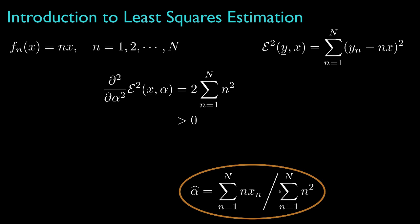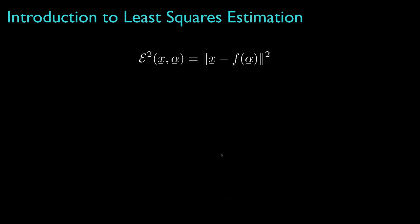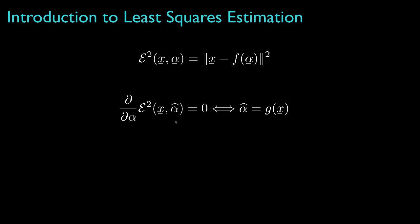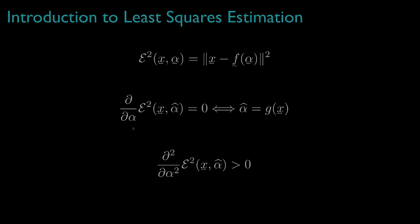To verify that this value is a minimum for the squared error rather than a maximum or a point of inflection, we should confirm that the second derivative is positive, which in this case it is. In summary, when we perform least squares estimation for a scalar parameter, we begin by using the observation function f to set up the squared error. Then we identify the value for alpha that sets the derivative equal to 0, provided that this value is inside the constraint set for the parameter. We should then use the second derivative of the squared error to verify that our estimator produces a minimum rather than a maximum or a point of inflection. In subsequent lessons, we'll extend this approach to the situation for vector parameters.